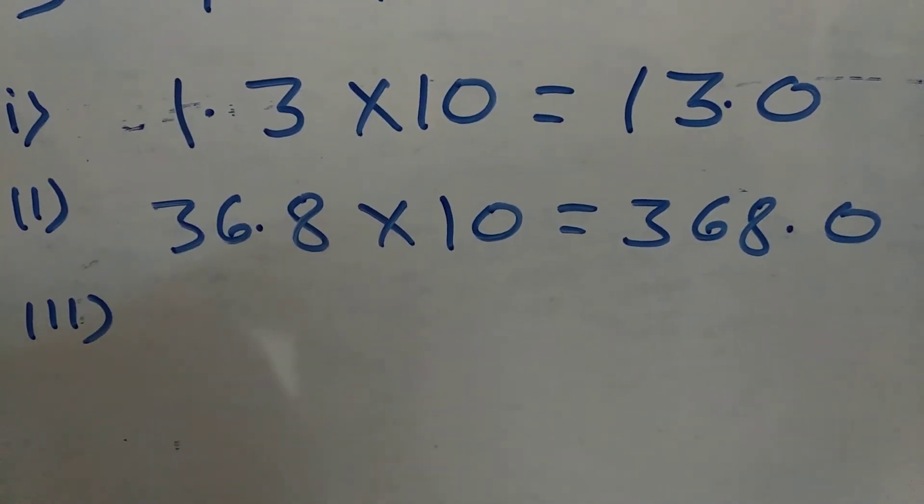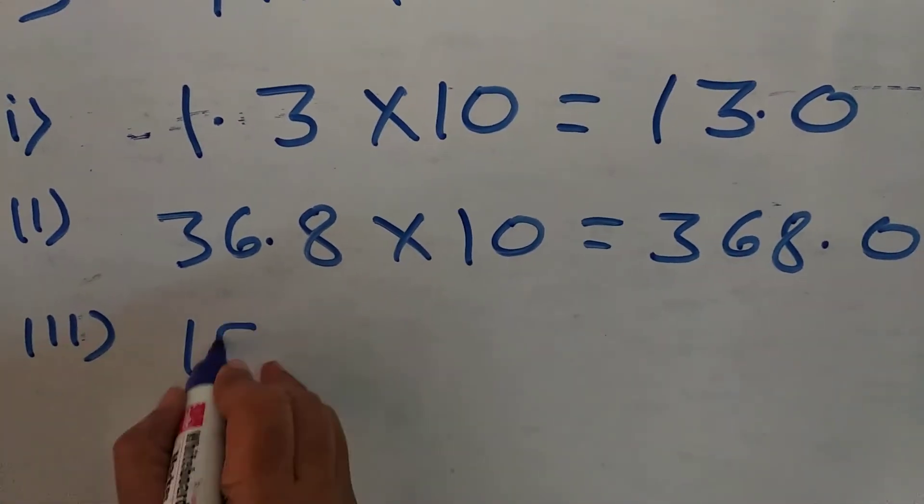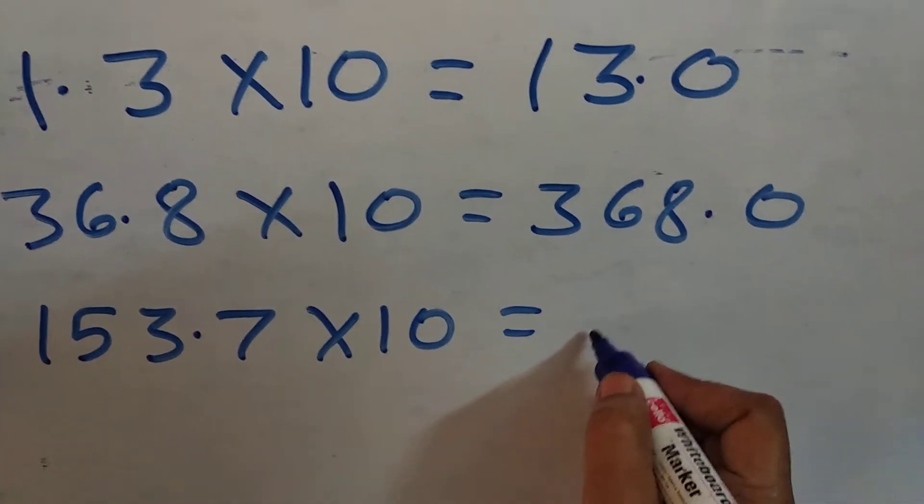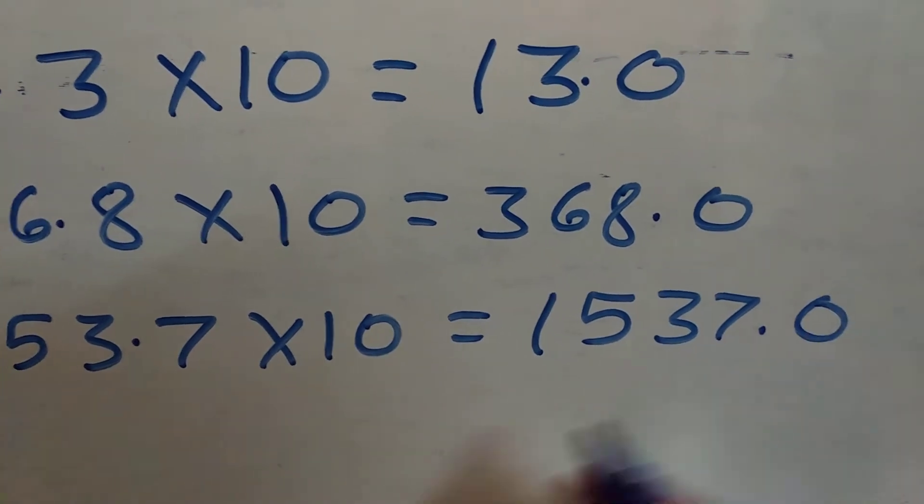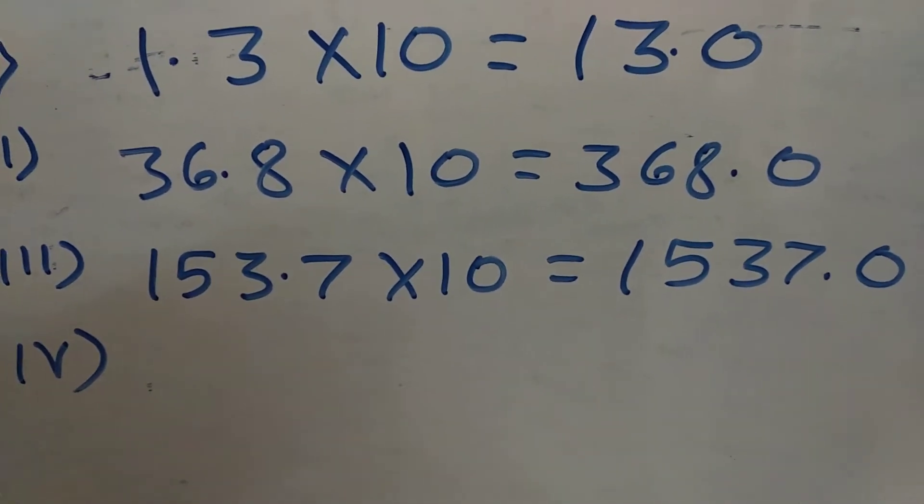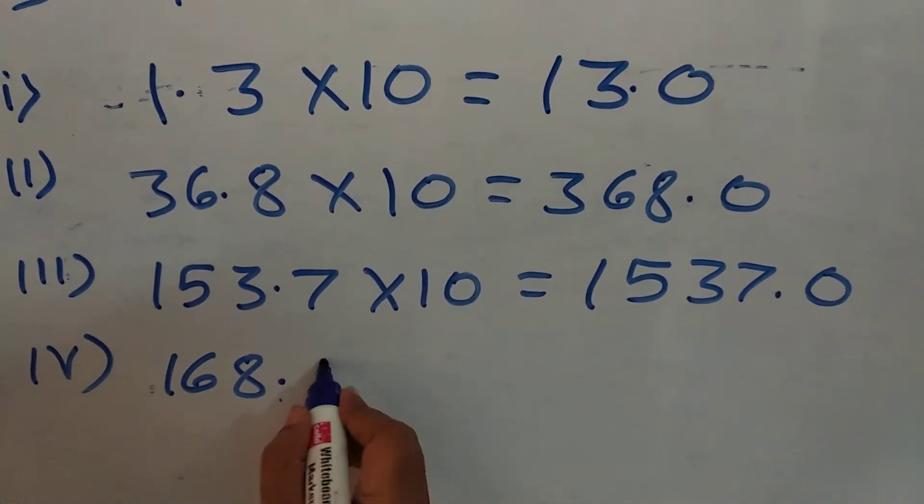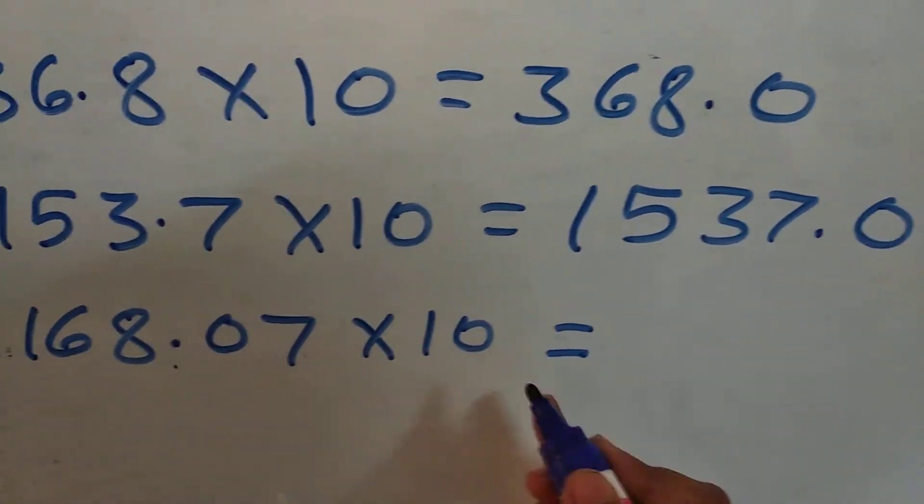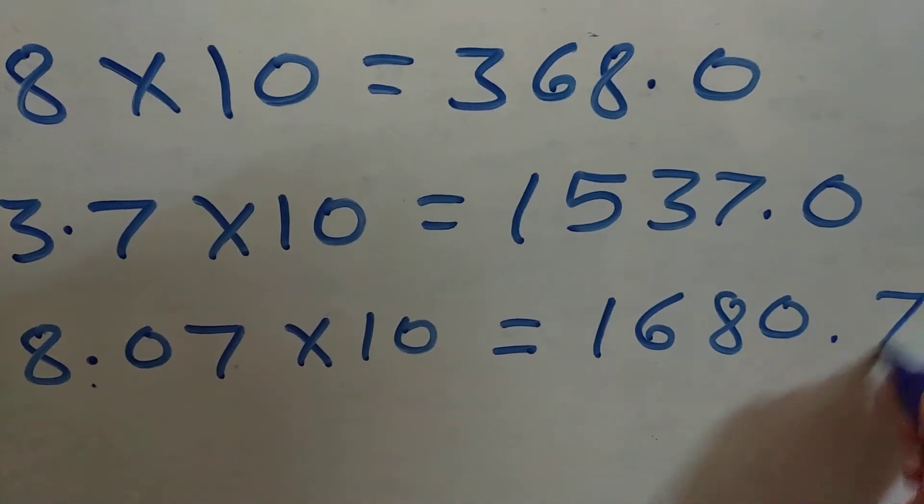Third one, 153.7 multiplied by 10. It is coming 1537.0. Now, fourth one, 168.07 multiplied by 10. It is coming 1680.7.